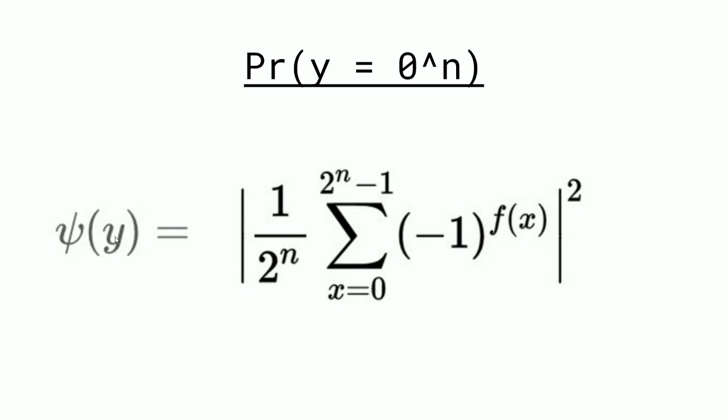Now, what ends up happening is we can see here that the output of the function, if it's balanced, is going to cancel each other out. Why? Because if function x outputs zero, then this equation is going to result in one. If function x outputs one, then this equation here outputs negative one. So we can see that since we're adding them all up, that if we keep adding up one plus one plus one plus one, essentially what's going to happen is the probability of it is going to equal one at the end. If it's balanced, so if there's an even number of ones and negative ones, the probability of it equaling zero is going to be zero.